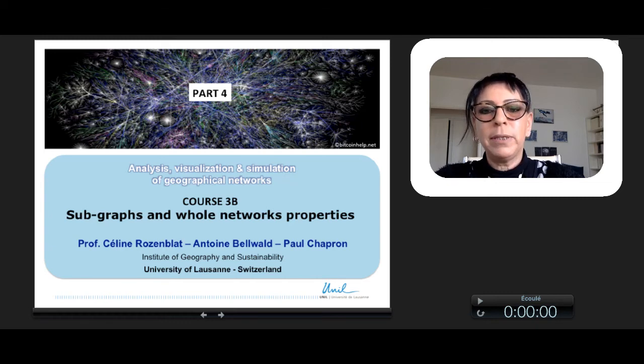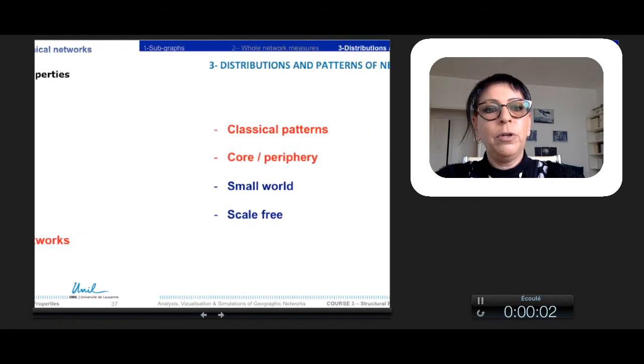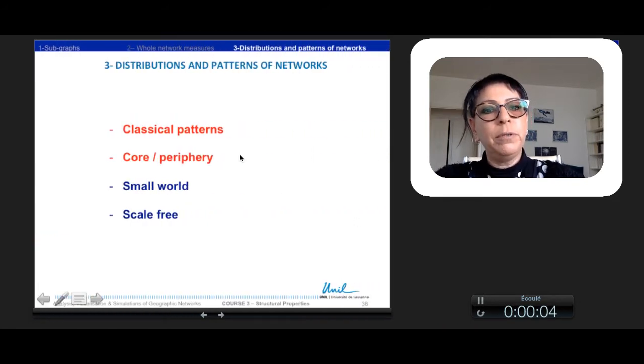After the whole network properties, let's see now the distribution and patterns of networks. We will see four different patterns, but first we will see two of them, some classical patterns and the core periphery pattern.